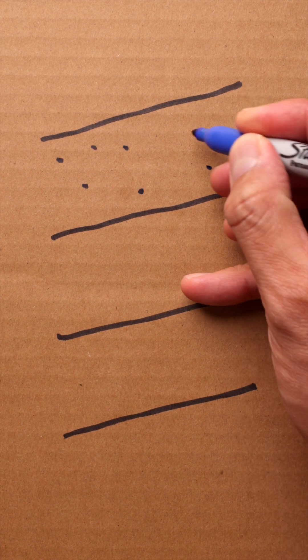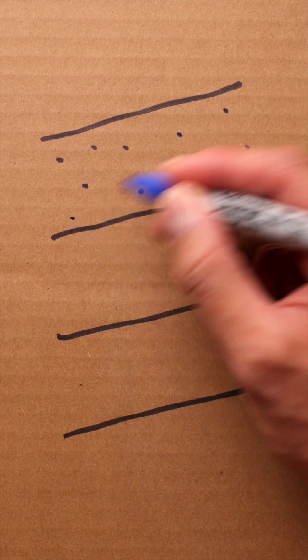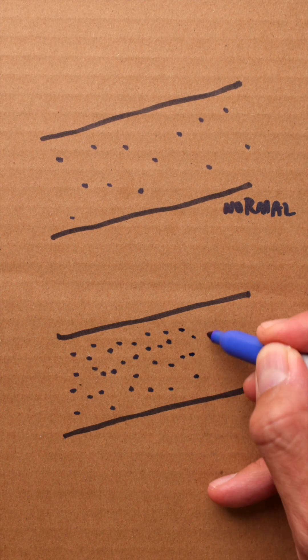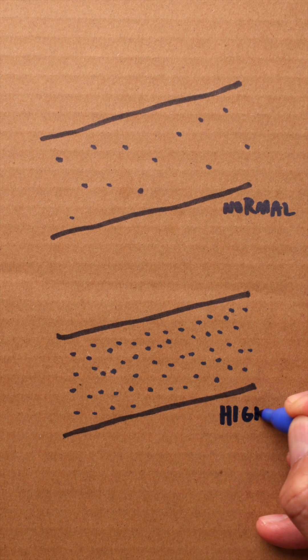Here we have two blood vessels. The dots represent glucose floating around in the bloodstream. The top shows normal blood sugar and the bottom shows elevated blood sugar with much more glucose.